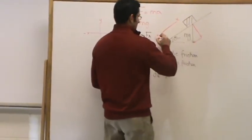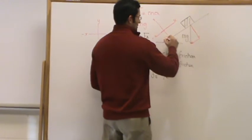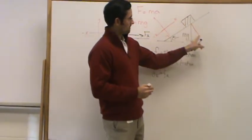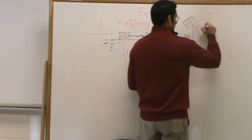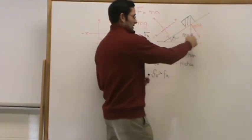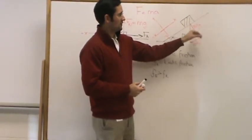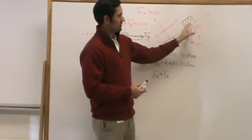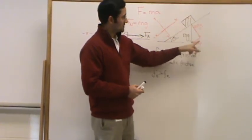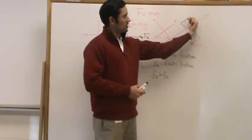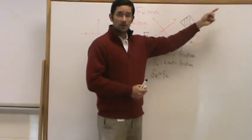So our x axis is still parallel to the surface and our y axis is still perpendicular to the surface. Anything on our y axis is the y component (MgY), and the x component is MgX. The y component of gravity is responsible for generating friction because it's the component pushing the box into the surface. The x component is responsible for pushing the box down the surface, which may cause the box to slide.